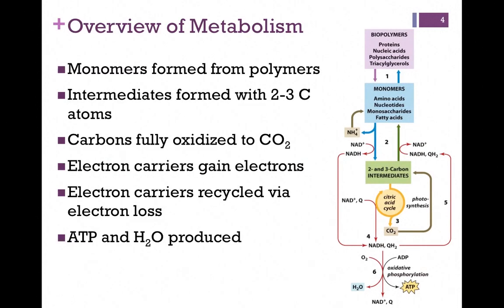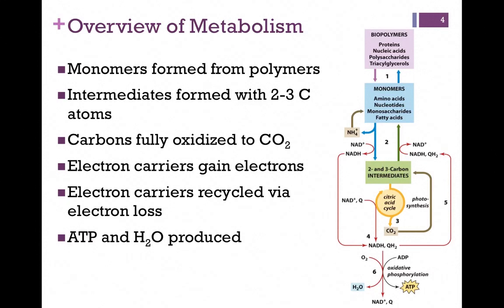In this overview of metabolism, we start at the top with our biopolymers. Remember, in digestion we broke those down to the monomeric form. These monomers are then converted to intermediates of two and three carbon compounds. These carbons are then fully oxidized to CO2, and in this process we extract electrons and pass those to temporary electron carriers. Those get recycled through electron loss in oxidative phosphorylation, pictured at the bottom of the screen. In this process, we produce both water and ATP. This is an overview of chapters 13, 14, and 15.